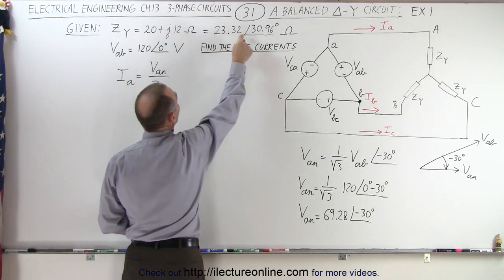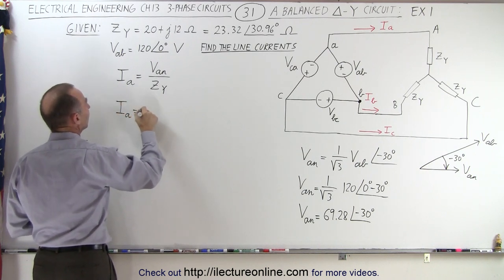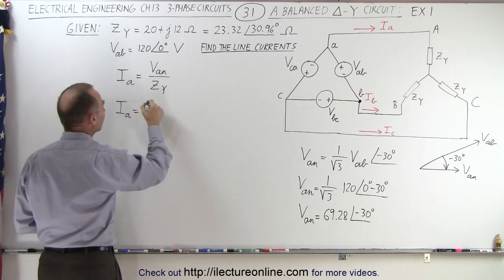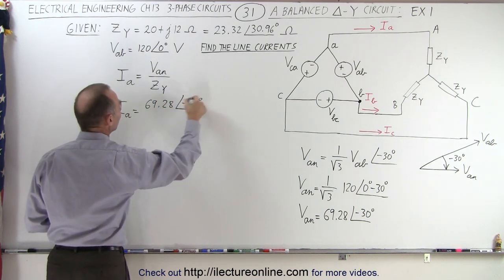And since we already have our impedance converted to magnitude and phase angle, we can then say that I sub A is equal to Van, which is 69.28 with a phase angle of minus 30 degrees.